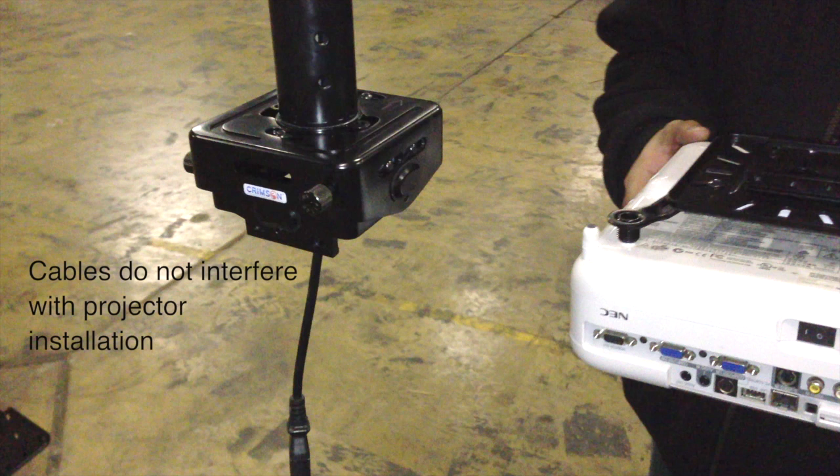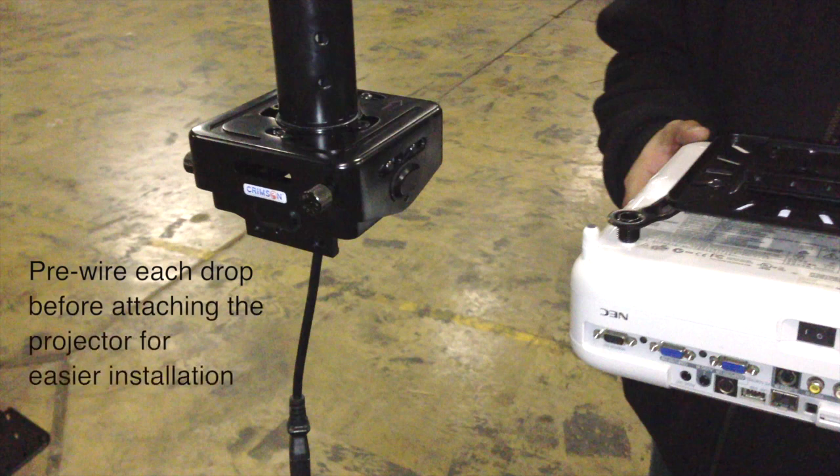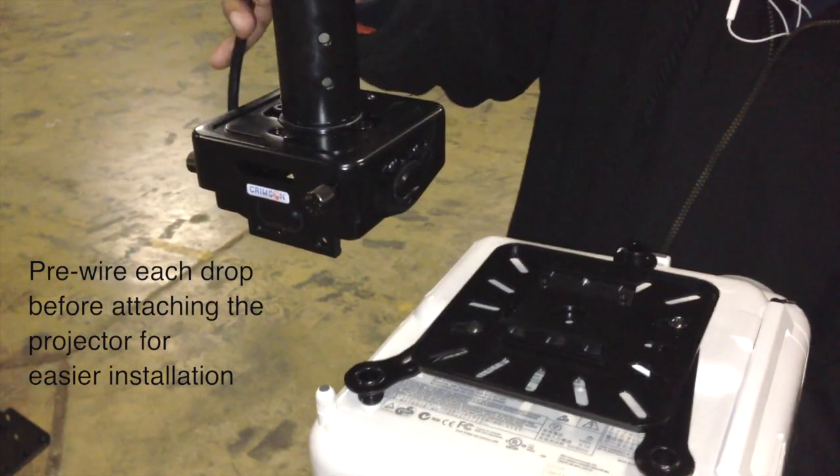The JR3's open architecture allows for easy cable management. Installation can be simplified by pre-wiring the drops. Pre-wired drops will not interfere with the installation of the projector.